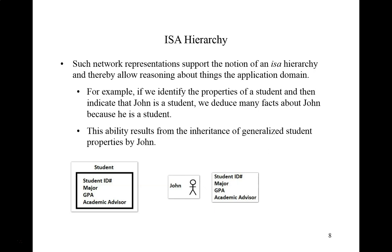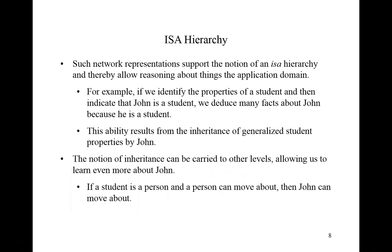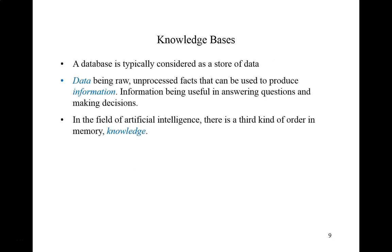If a student has a student ID number, a grade point average, a major, and an academic advisor, then because John is a student, he possesses all of these attributes or properties. This ability results from the inheritance of a generalized set of student properties for John. The notion of inheritance can be carried to other levels, allowing us to learn even more about John. If a student is a person, and a person can move about, then John can move about.